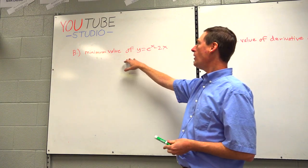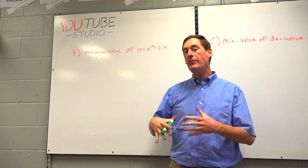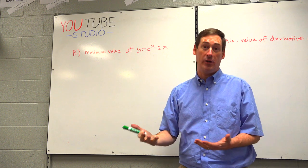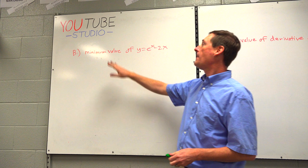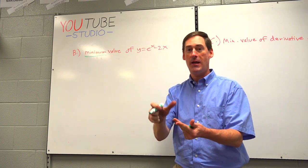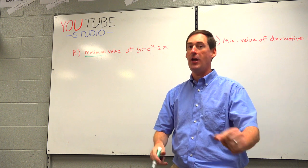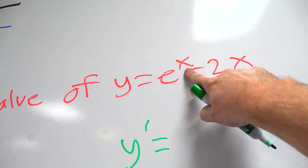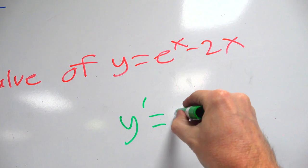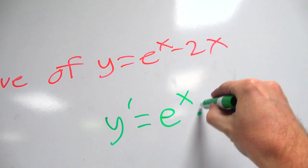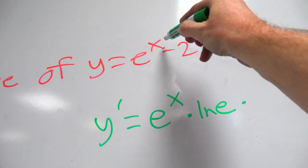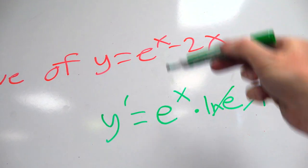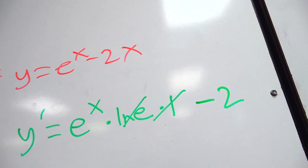For question B, we've got the minimum value of y equals e to the x minus 2x. When the graphs get more complex, we're not quite sure what they look like — it's kind of exponential growth, but it's also kind of linear at the same time. Don't worry about the graph. Trust the calculus. Keyword: minimum. Maximum, minimum, increase, decrease — those four words mean take the derivative and do a number line. So we take the derivative: y prime equals e to the x minus 2. Remember exponentials — when the x is in the exponent. The derivative of e to the x is e to the x, and minus 2x gives minus 2. There's our derivative.